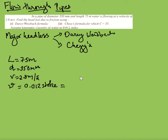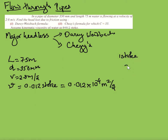To convert stokes into meter square per second, multiply by 10 raised to minus 4. So ν = 0.012 × 10⁻⁴ meter square per second, since one stoke equals 10⁻⁴ meter square per second.